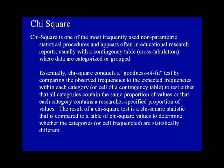Chi-square is one of the most frequently used non-parametric statistical procedures and appears often in educational research reports, usually with a contingency table or cross-tabulation, where data are categorized or grouped. Essentially, Chi-square conducts a goodness of fit test by comparing the observed frequencies to the expected frequencies within each category or cell of a contingency table, to test either that all categories contain the same proportion of values or that each category contains a researcher's specified proportion of values.